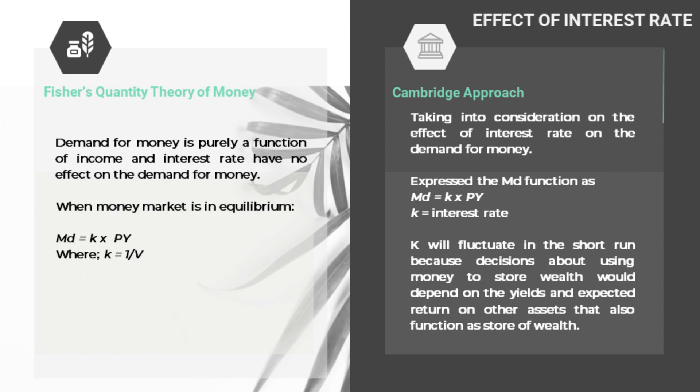Moving on to the second difference, which is the effect of interest rates. Fisher's Quantity Theory of Money suggests that the demand for money is purely a function of income, and interest rates have no effect on the demand for money. We can see that when the money market is in equilibrium, the theory of money demand is equal to k times PY, where k is the inverse of the velocity of money.